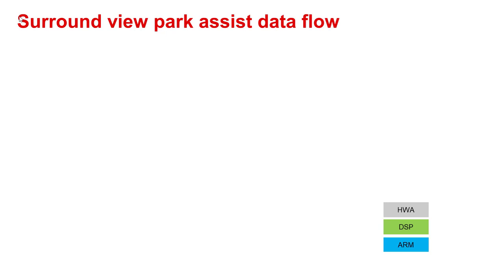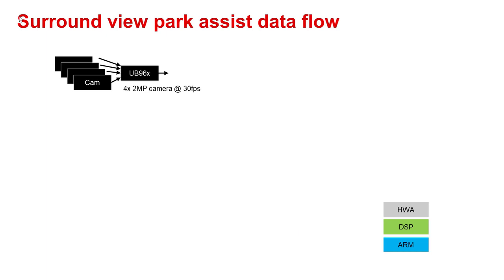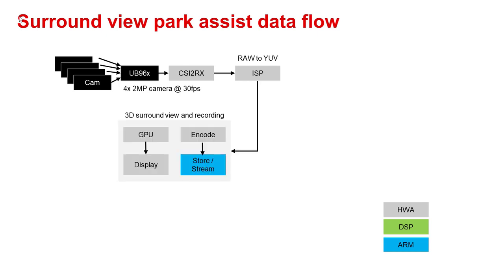With the hardware block diagram defined, let us now see how the Surround View Park Assist application is realized using Jacinto 7 CPUs and hardware accelerators. Camera data is input to Jacinto 7 via UB960 deserializer CSI-2 port. This data is captured within the Jacinto 7 SoC by the CSI-2 RX hardware block. The data is then fed to ISP, or image signal processor, which converts the data from raw-Bayer format to YUV format. The ISP output is then fed to GPU for surround view visualization and display. The ISP data is also optionally compressed and stored or streamed to a non-volatile memory like eMMC. This forms the visualization pipeline.